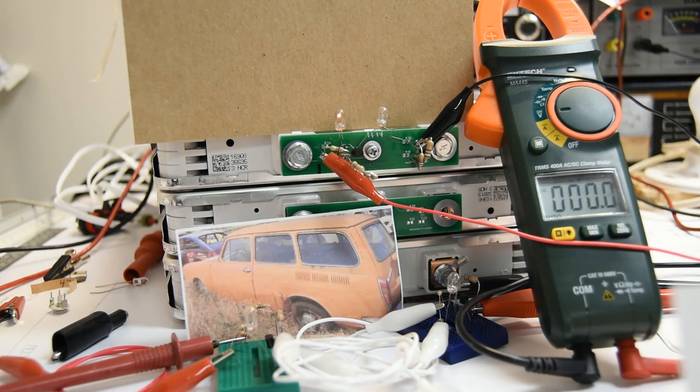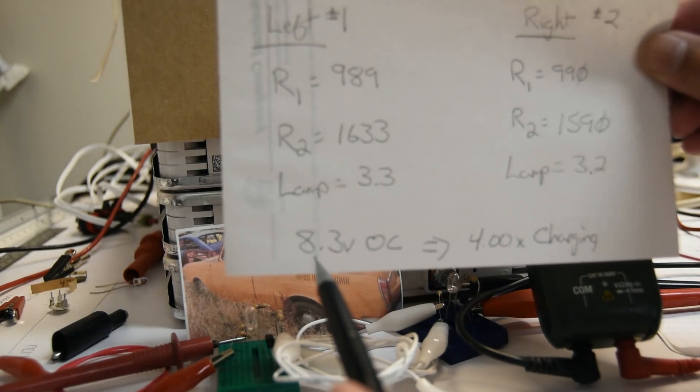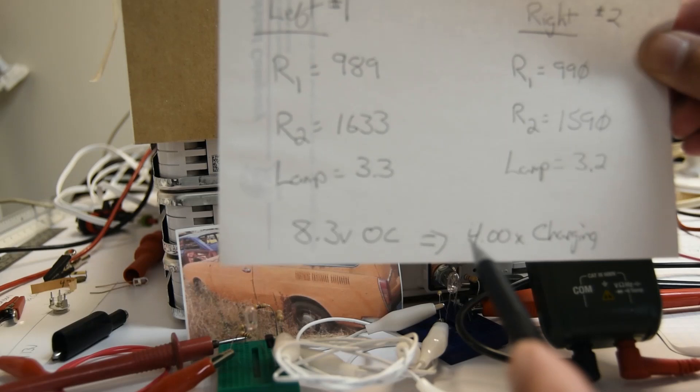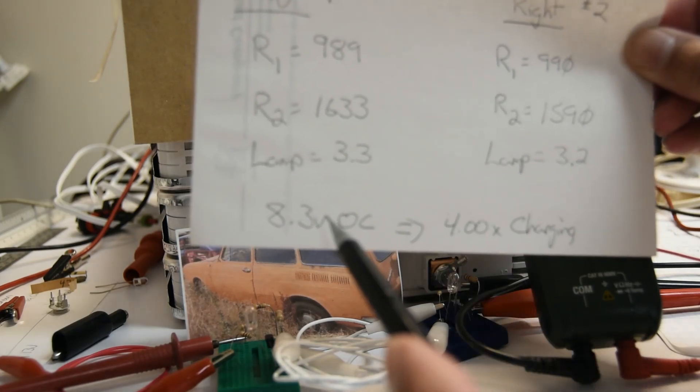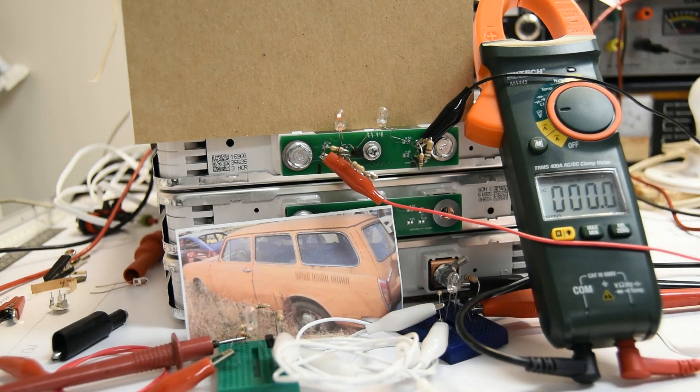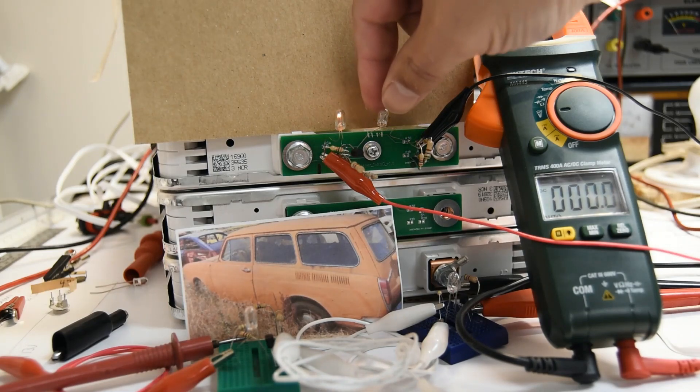I had 8.3 volts open circuit going into the battery. The minute I connected everything up and started charging, I dropped it down to 4 volts per, which is 8 volts total. So that tells me that the battery is taking a load and also suggests my shunt regulators are working.